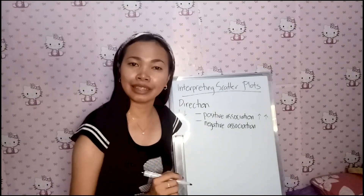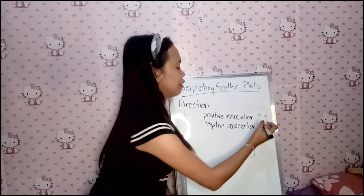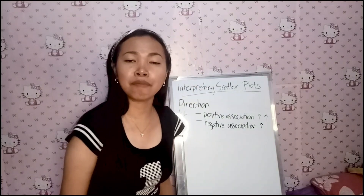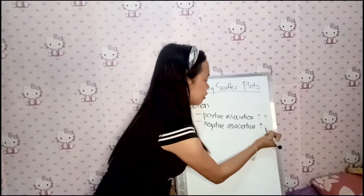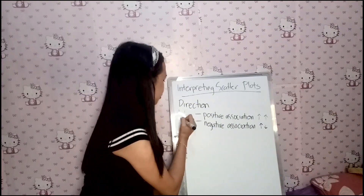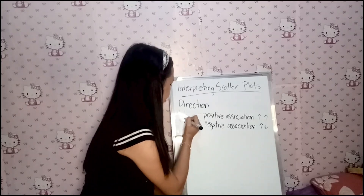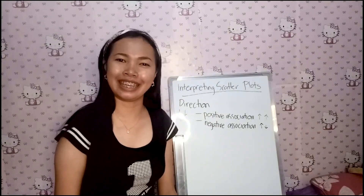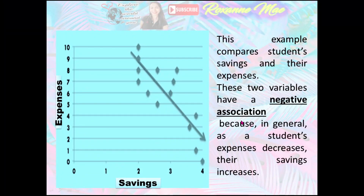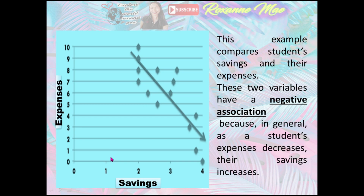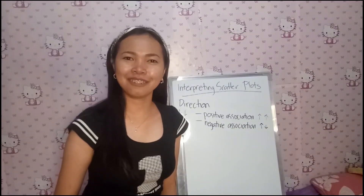Two variables have a negative association when above-average values of one tend to accompany below-average values of the other. Let us have an example. This example compares students' savings and their expenses. These two variables have a negative association because in general, as a student's expenses decrease, their savings increase.